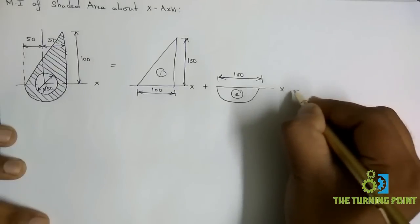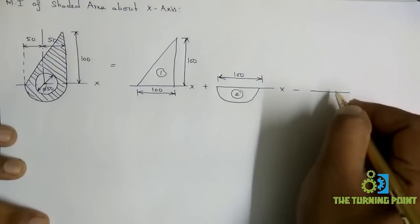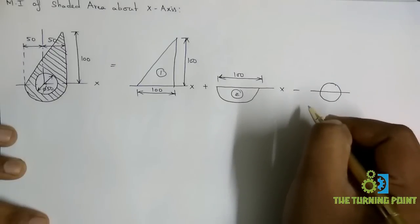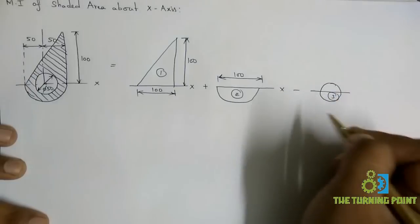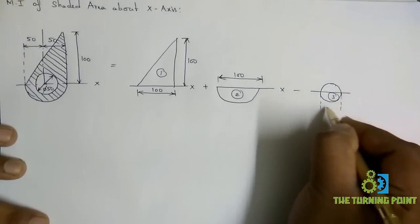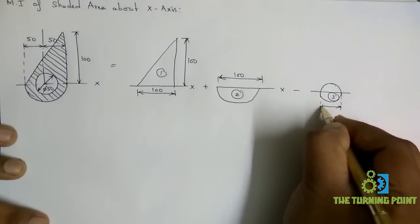From this you need to subtract the third geometry which is a complete circle of diameter 50.